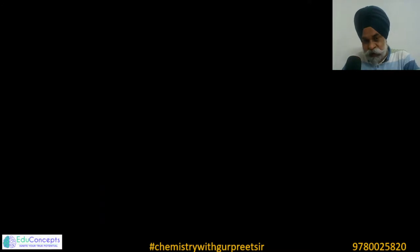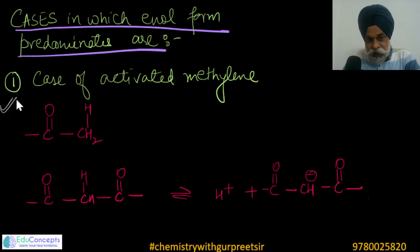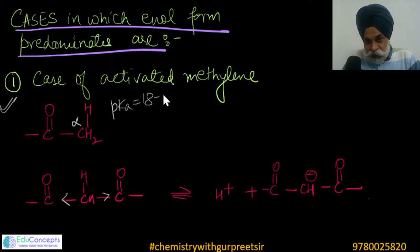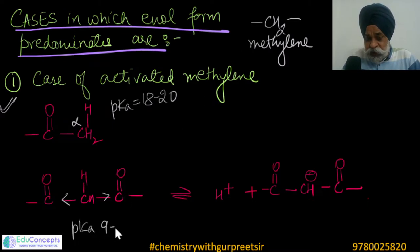Cases in which enol form predominates: the first case is activated methylene. In a simple aldehyde or ketone, the alpha carbon has alpha hydrogens with pKa ranging from 18 to 20. Activated methylene refers to a CH2 group flanked by two electron-withdrawing carbonyl groups. When two EWGs attach to the methylene, the pKa drops to 9–11 — or even lower for strongly withdrawing groups. This increased acidity of the alpha hydrogen drives more enolization.